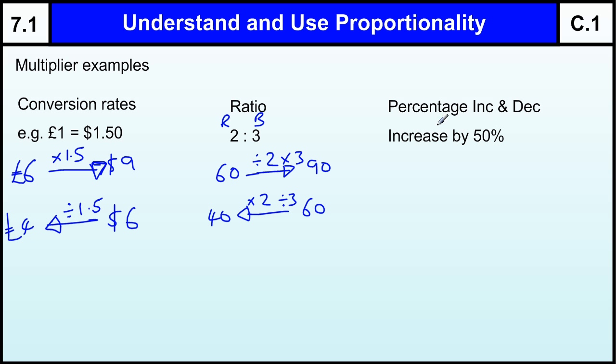Now this is the one we really need to focus on: percentage increase and decrease. This is the most common type of proportionality question, if I want to increase by a certain percentage. And again, I'm actually using the same multiplier here. So I'm increasing by 50%, which is the same as these two things here.